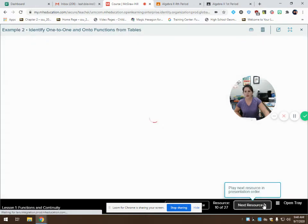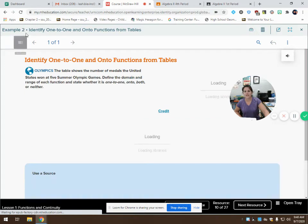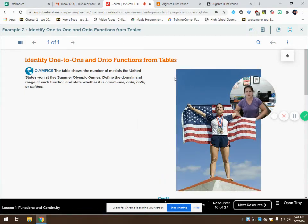So let's try our example number two. Identify one-to-one and onto functions. So it says the table shows the number of medals the United States won at five Summer Olympic Games. Just a fun little fact. I recently found out that Mr. Johnson got married over the summer and the lady that he married is going to be competing in the Olympics in Beijing. Isn't that so cool? Right here at West, she helps train in our weight room. We have someone who's going to be competing in the Olympics. That is pretty awesome.